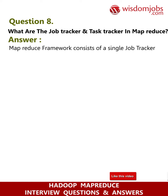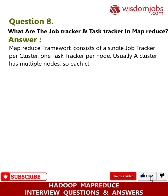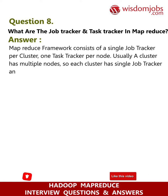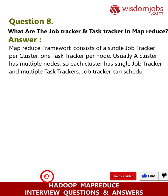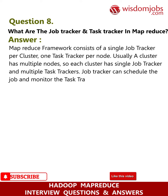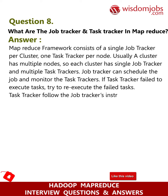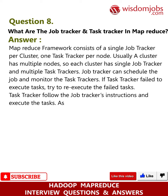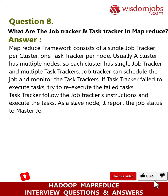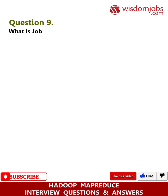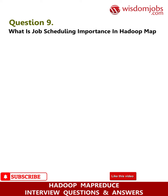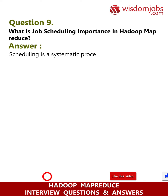Question 8: What are the job tracker and task tracker in MapReduce? Answer: The MapReduce framework consists of a single job tracker per cluster and one task tracker per node. Since a cluster has multiple nodes, each cluster has a single job tracker and multiple task trackers. The job tracker schedules jobs and monitors task trackers. If a task tracker fails, the job tracker re-executes the failed tasks. The task tracker follows the job tracker's instructions, executes tasks as a slave node, and reports job status to the master job tracker in the form of a heartbeat.